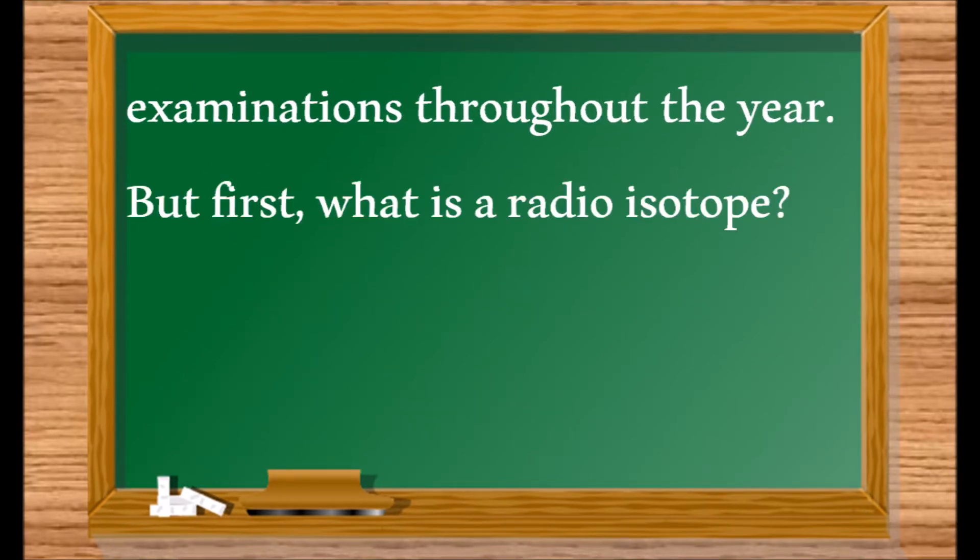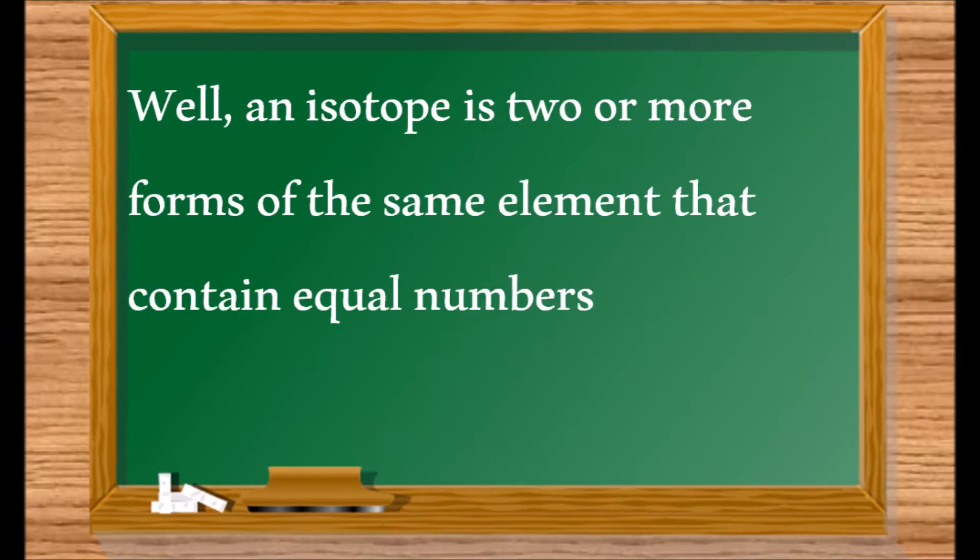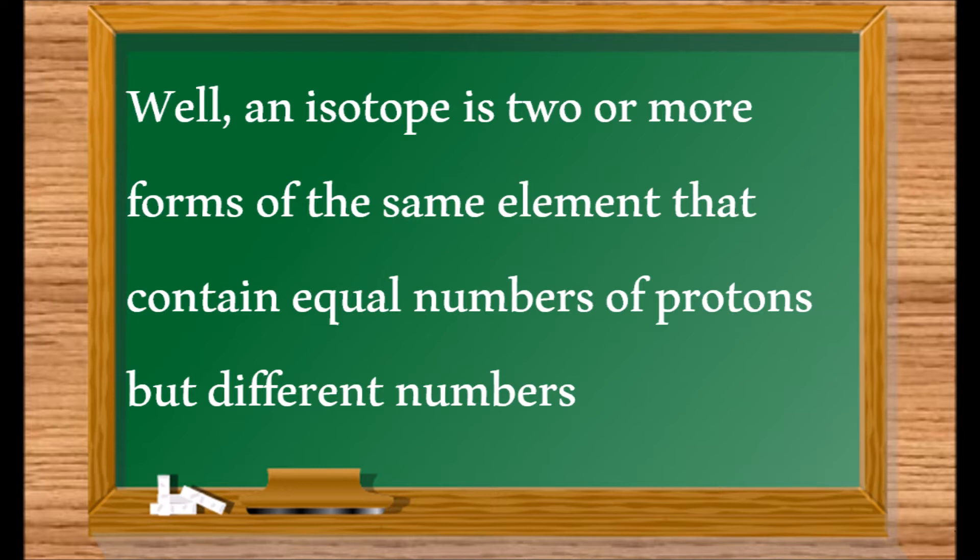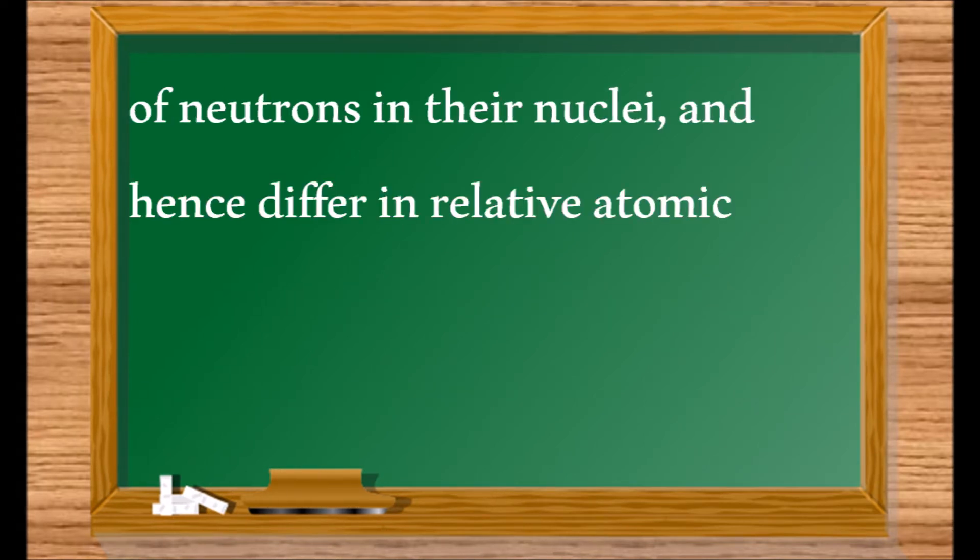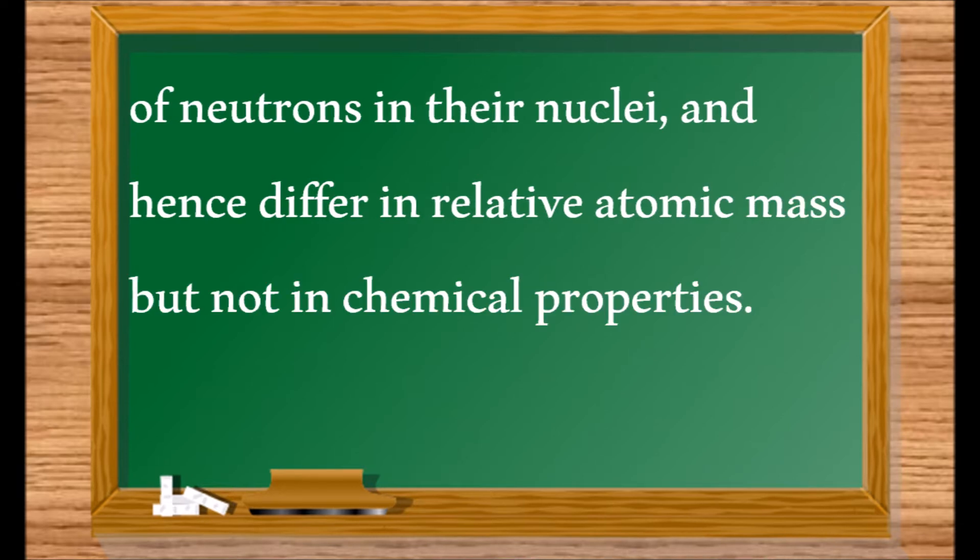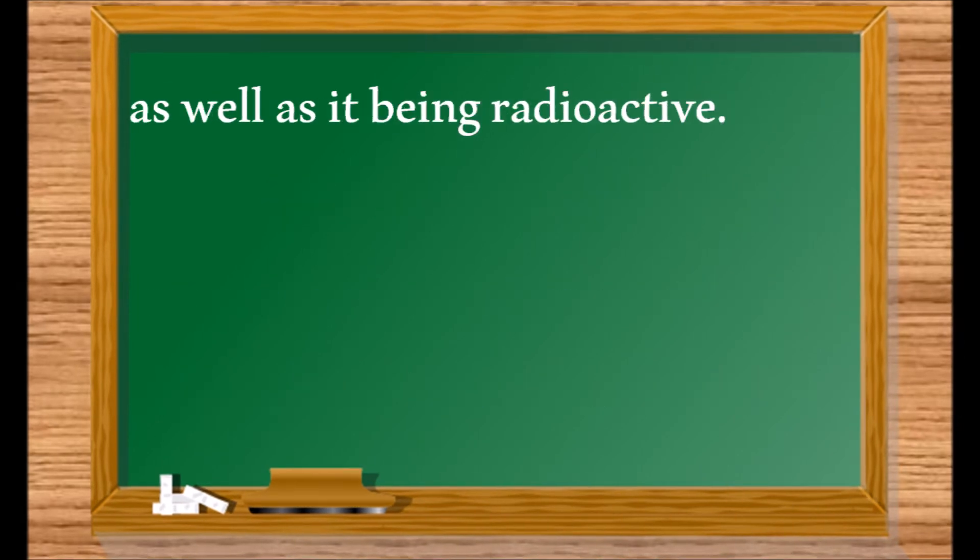But first, what is a radioisotope? Well, an isotope is two or more forms of the same element that contain equal numbers of protons but different numbers of neutrons in their nuclei, and hence differ in relative atomic mass but not in chemical properties. So a radioisotope is an isotope that is also radioactive.